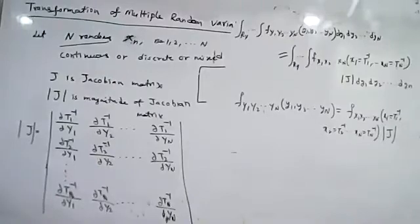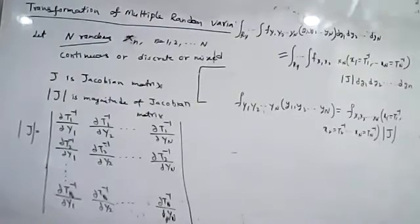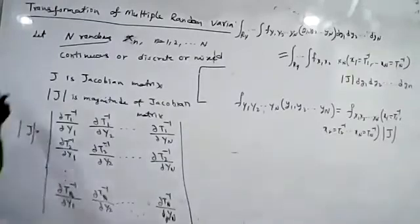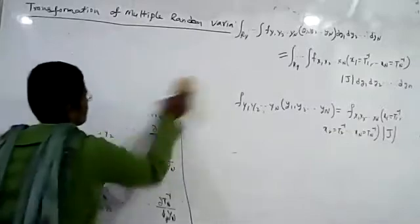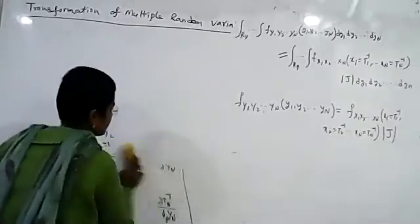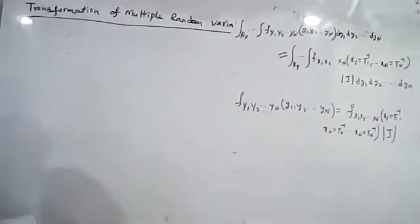Here y is the transformed random variable, and x is the input random variable. This gives us the relation between the transformed and input random variables. We have discussed the transformation of N random variables.